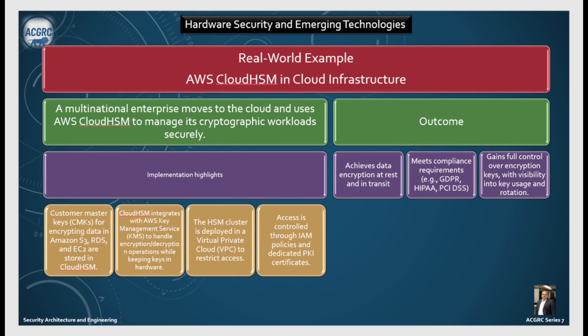In a real world example, a multinational enterprise moves to the cloud and uses AWS CloudHSM to manage its cryptographic workloads securely. The customer's master keys for encrypted data in Amazon S3, RDS and EC2 are stored in CloudHSM. The CloudHSM integrates with AWS Key Management Service to handle encryption and decryption operations while keeping keys in hardware. The HSM cluster is deployed in a virtual private cloud to restrict access, controlled through IAM policies and dedicated PKI certificates. The outcome: data encryption at rest and in transit, compliance with GDPR, HIPAA, PCI DSS, and full control over encryption keys with visibility into key usage and rotation.